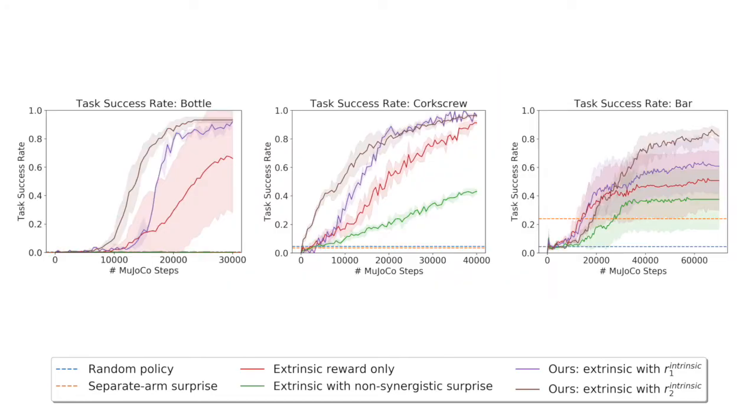We see similar takeaways in our other environments. Next, we will show videos of typical learned behavior by the various methods at 20,000 training iterations, a point at which our methods are performing consistently well.